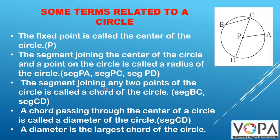The segment joining any two points of the circle is called a chord of the circle. Segment BC and segment CD are the two chords of the circle.